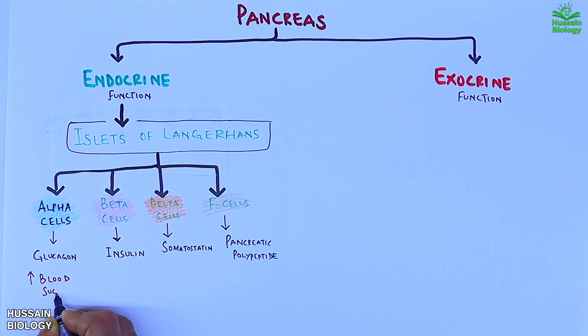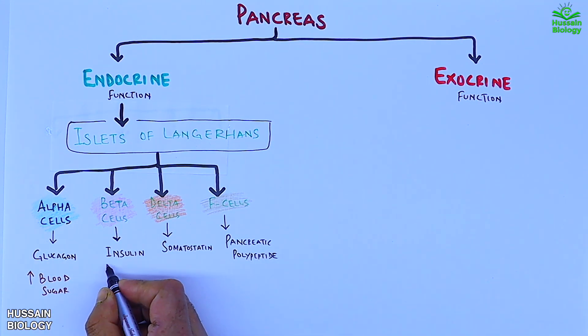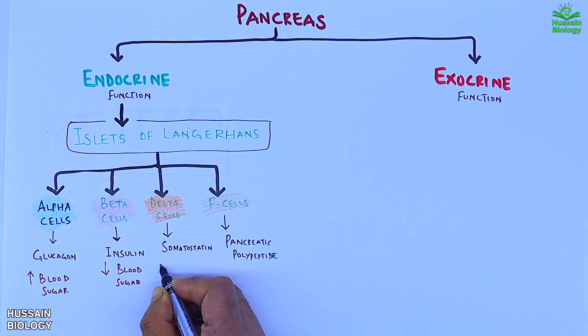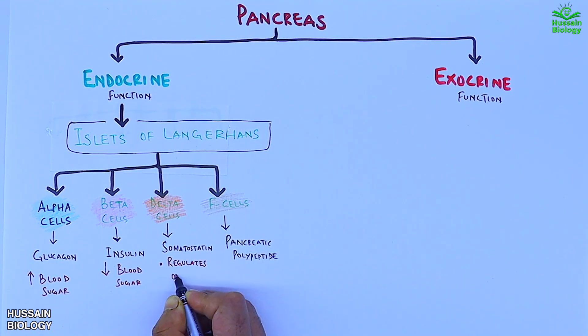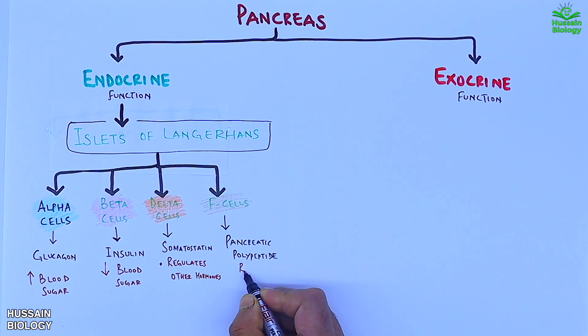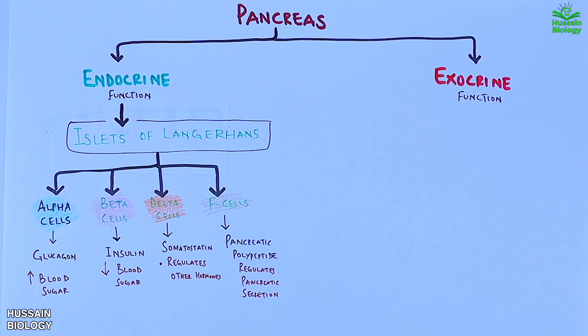The alpha cells secrete glucagon, beta cells secrete insulin, delta cells secrete somatostatin, whereas F cells secrete pancreatic polypeptide. Glucagon increases blood sugar, insulin does the opposite — it decreases blood sugar, somatostatin regulates other hormones, and pancreatic polypeptide regulates pancreatic secretion.